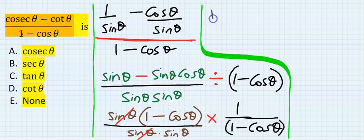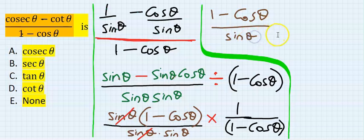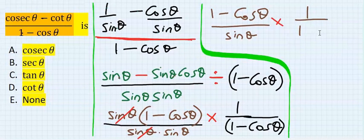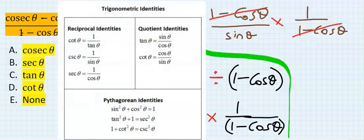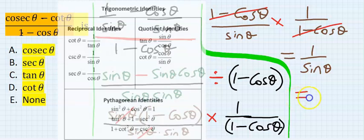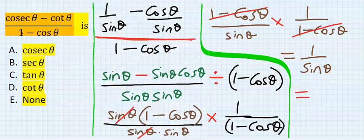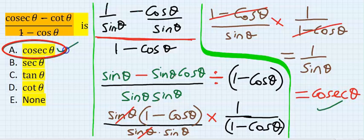So we are just left with 1 minus cos theta over sine theta multiply by 1 over 1 minus cos theta. This 1 minus cos theta will take away 1 minus cos theta and you are left with 1 over sine theta. So from trig identity, 1 over sine theta is cos theta. Our answer is A.